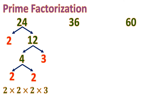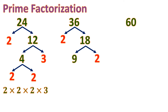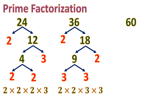Now for 36: it can be written as 2 times 18, and 18 can be written as 9 times 2, and 9 can be written as 3 times 3. So the prime factorization of 36 is 2 times 2 times 3 times 3.